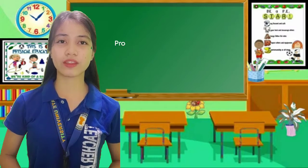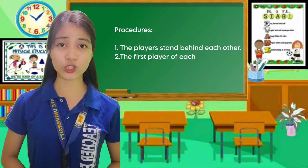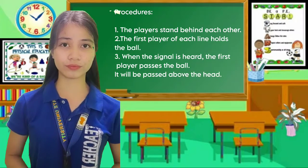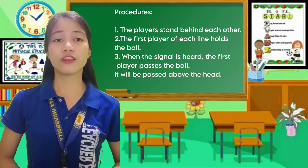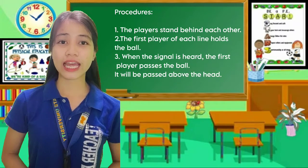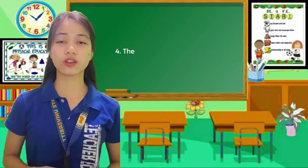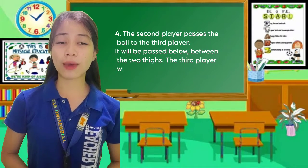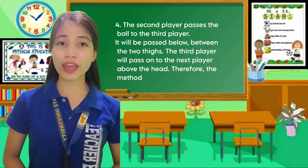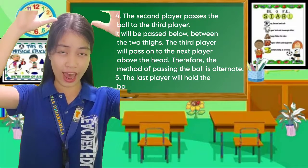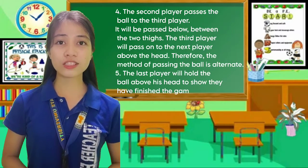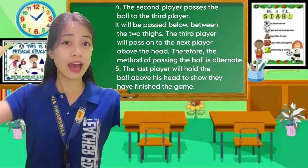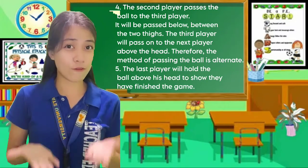How to play the game: First, the players stand behind each other. Second, the first player of each line holds the ball. Third, when the signal is heard, the first player passes the ball above the head. Fourth, the second player passes the ball to the third player below between the two legs. The third player will pass to the next player above the head. Therefore, the methods of passing the ball alternate.